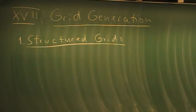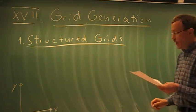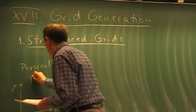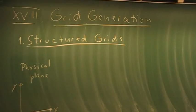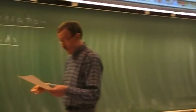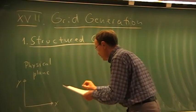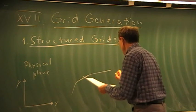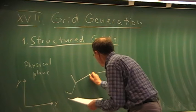What do we mean by structured grids? Taking the center plane example, we work in 2D — the XY plane — which we call the physical plane. If we want to discretize, say, the nose or canopy region of the aircraft, we place grid points in the physical plane at some distance from the surface, going outward.